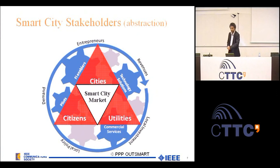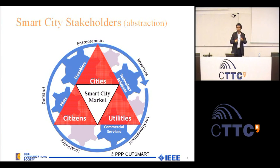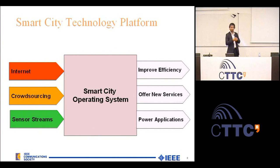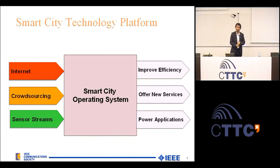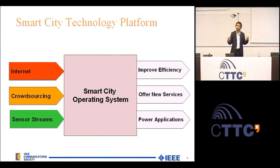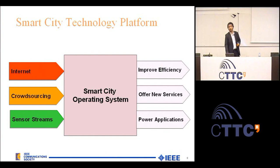As an example, let me show you the stakeholders of a smart city, which was developed in the PPP OutSmart. Essentially you have the smart city market, and around it you have the stakeholders — the cities, the citizens, and the utilities. We'll show you the smart city operating system, a concept which is emerging now, similar to our computer operating system. Cities would like to have smart city operating systems where they will be feeding data in — be it from the internet, crowdsourced from the people, or from sensors deployed all over the city. These sensors are exactly my machine to machine devices; there will be a lot of those, we don't want any human intervention. They're collecting a lot of data that goes into the smart city operating system, being processed to help improve the efficiency of the city, offer new services, and power essentially new applications.